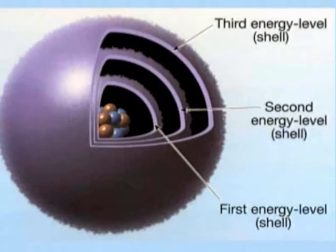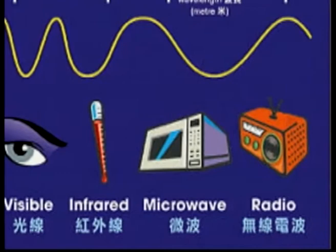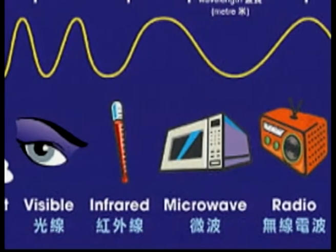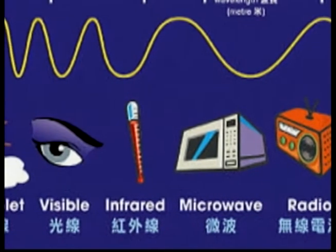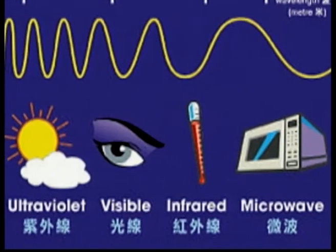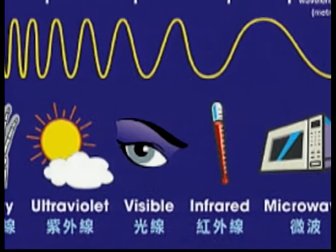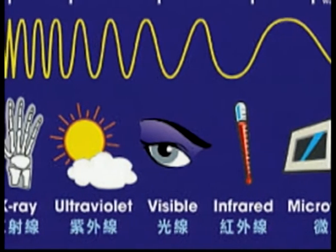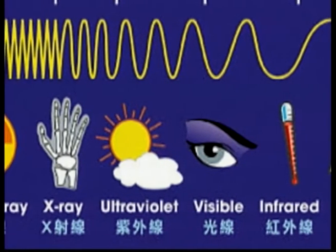There are two types of radiations: non-ionizing and ionizing. Non-ionizing radiations are radiations of short wavelength but with more energy content. This energy can excite the atom but does not produce ions.